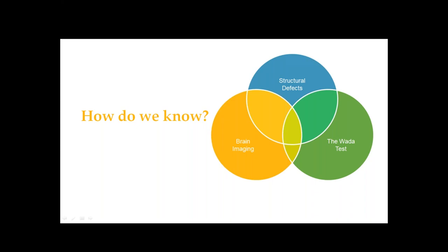Looking at an individual who has lost a particular function, and then later on, after that person has passed away, doing a post-mortem and seeing what part of the brain was different than what you would expect to find in an individual who did have that function. Looking at those structural defects has allowed us to say that individuals who have strokes, lesions, or damage predominantly to the right side of the brain tend to have a certain pattern of functional deficit, and therefore you consider those functions to be lateralized within the right hemisphere.